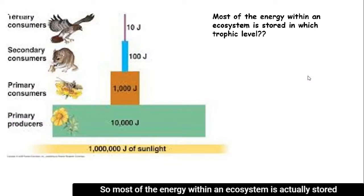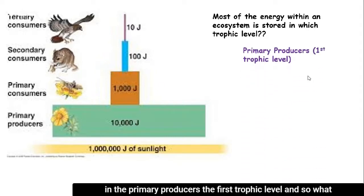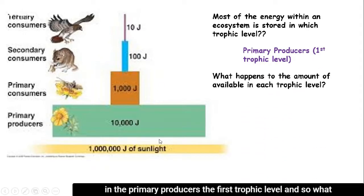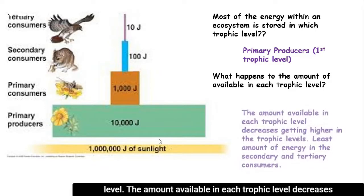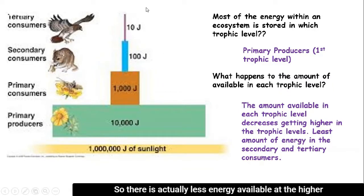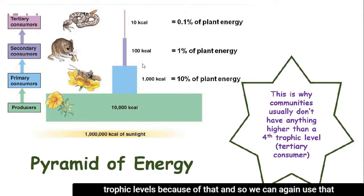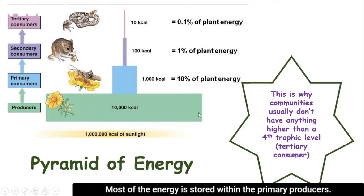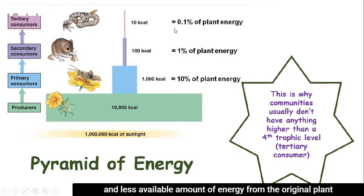Most of the energy within an ecosystem is actually stored in the primary producers — the first trophic level. The amount of available energy in each trophic level decreases as you go higher. We can use an energy pyramid to show that relationship, where the base — which is the widest — holds most of the energy in the primary producers. As you go up through the different trophic levels, there is less and less available energy from the original plant energy supply in that ecosystem.